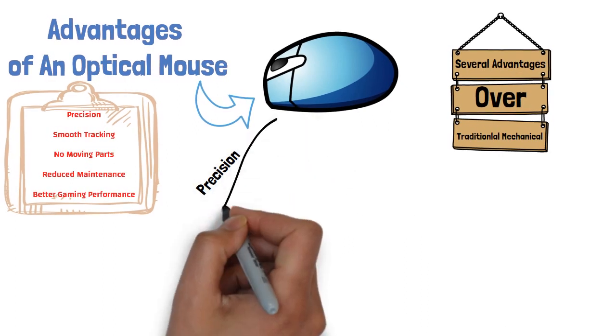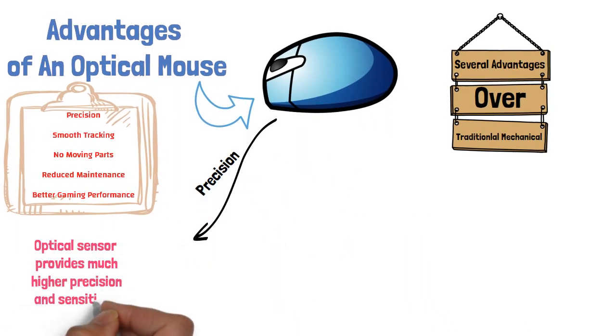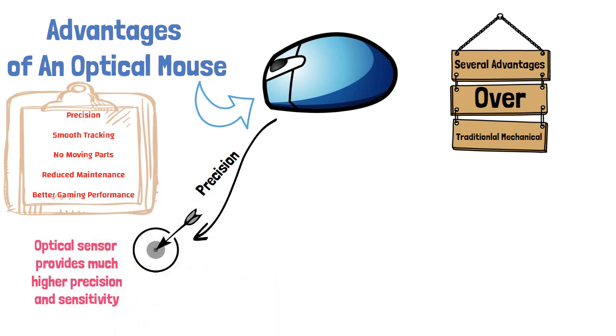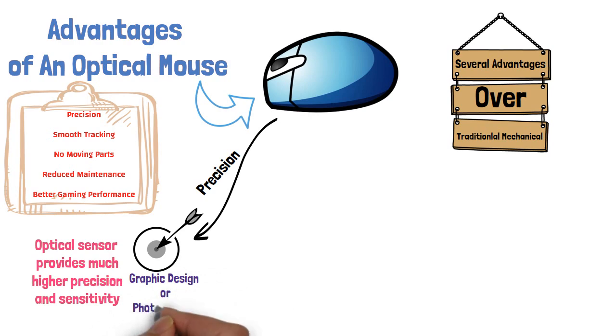Precision. The optical sensor provides much higher precision and sensitivity, allowing for precise cursor movements, ideal for tasks like graphic design or photo editing.